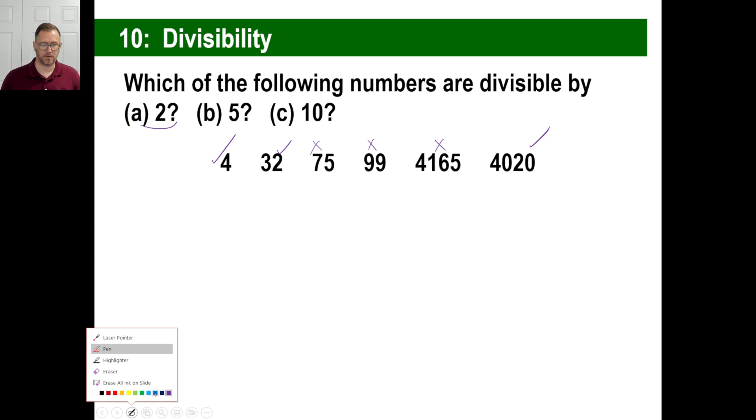Which is divisible by 5? Needs to be ending in a 5 or a 0. Nope. Nope. Yes. Nope. Yes. And yes. Which one is divisible by 10? Has to end in a 0. So the only one that is, is this one right here. So that is divisible by all 3. 4,020.